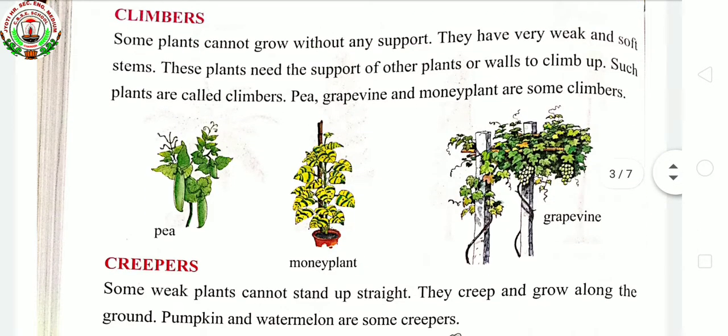Next is climbers. These type of plants have weak and soft stems. They cannot stand straight, so they take support by climbing up on other plants, on walls, or on sticks. Examples of climbers are pea, grapevine, money plant, and bean.